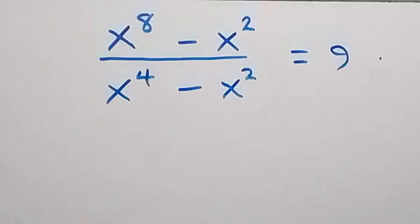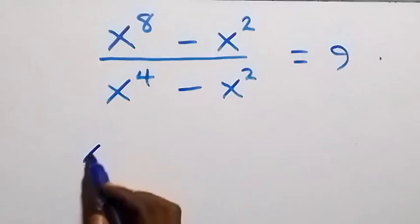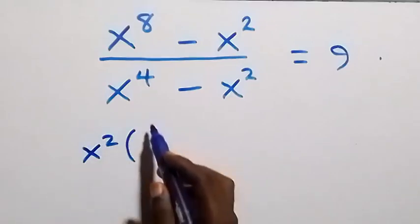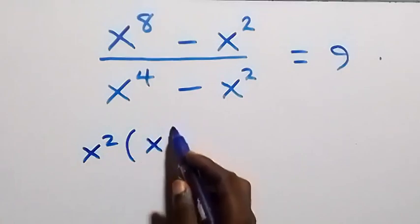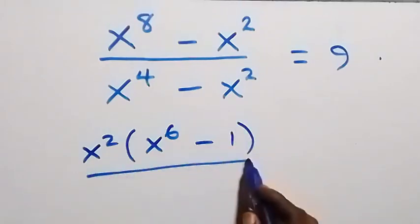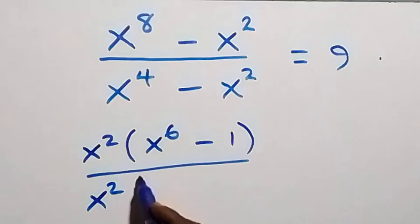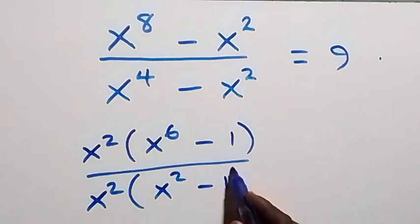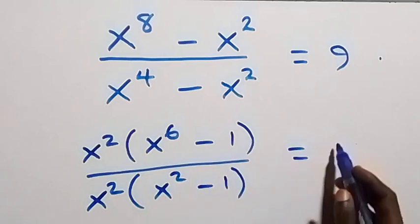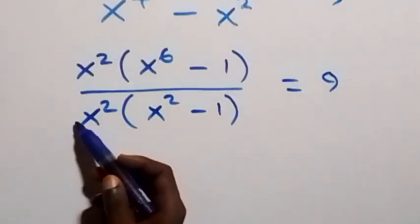Hello, you are welcome. How to solve this nice math problem. From what we have here, we can rewrite this and factor x² from here, and what we have inside becomes x⁶ minus 1. Then divided by this side, we also factor x² out, so we have x² into bracket, and what we have inside becomes x² minus 1, then equals to 9.